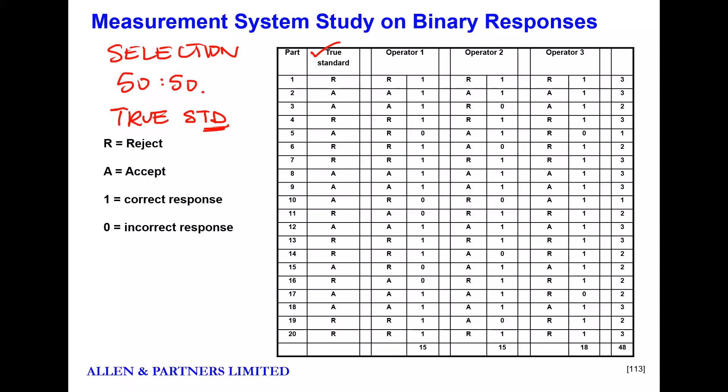And then, of course, what we're going to do is we're going to hold up the piece to each operator, essentially. And we're going to let the operator, or indeed a system, it could be a piece of equipment that's making this judgment. We are going to let the equipment or the measurement system make a judgment. And if the judgment agrees, like here, true standard was a reject, operator identified it as a reject, very simple. Give them a score of one. Now the software is going to do this for you. All you've actually got to type in is the letters, the R's and the A's, in the table. And the software will do the scoring for you. If, of course, the assessment is incorrect, the measurement system gets zero.